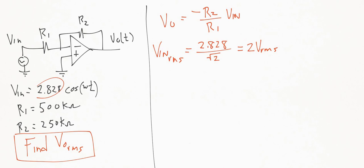And now we can rewrite the equation above for Vout in terms of RMS. So Vout RMS is equal to